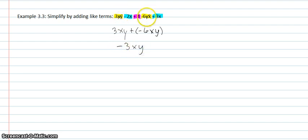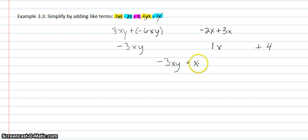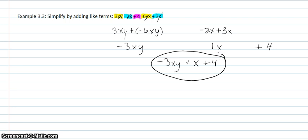Then I'm going to combine my x terms. I'll have negative 2x plus 3x, and that will give me a positive 1x. And the plus 4 just stayed the same. So my final answer would be negative 3xy plus just an x, because that's the same as 1x, plus 4. And we have simplified by adding like terms.